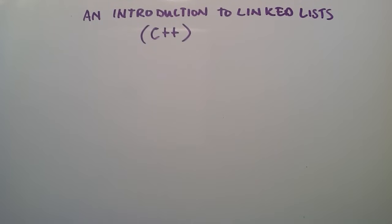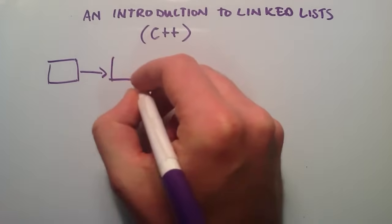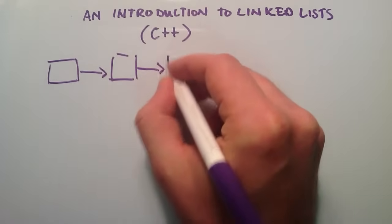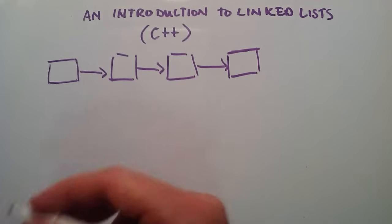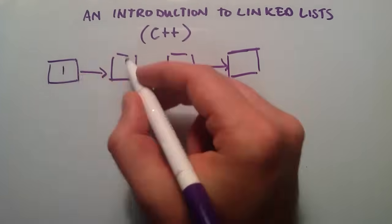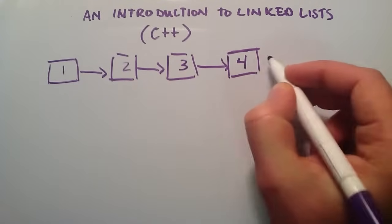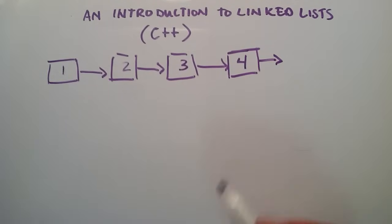Hey everybody, this is Paul. This is an introductory example to using linked lists, and I'll be using C++ to demonstrate how to build a linked list. The basic concept of a linked list is we have a bunch of nodes, and they're connected to each other by using pointers. You can place values inside each of these nodes and create a list of data members — for example, filling them with 1, 2, 3, 4, and so on.